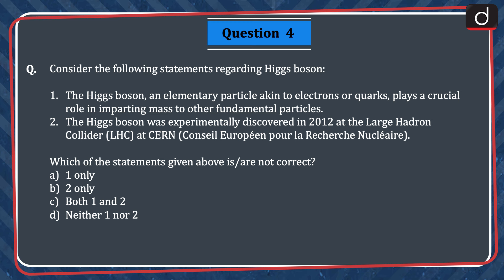Next question: consider the following statements regarding Higgs boson. (1) The Higgs boson, an elementary particle akin to electrons or quarks, plays a crucial role in imparting mass to other fundamental particles. (2) The Higgs boson was experimentally discovered in 2012 at the Large Hadron Collider at CERN. Which of the statements is or are NOT correct? Options: (A) one only, (B) two only, (C) both one and two, or (D) neither one nor two. The correct answer is option D — neither one nor two, i.e., both statements are correct.